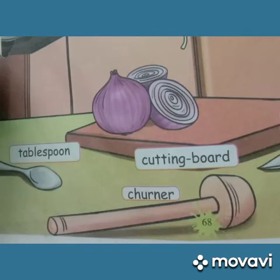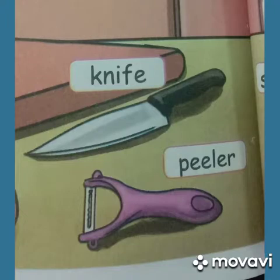Tablespoon — T-A-B-L-E-S-P-O-O-N. Cutting board — C-U-T-T-I-N-G B-O-A-R-D. Churner — C-H-U-R-N-E-R. Knife — K-N-I-F-E. Peeler — P-E-E-L-E-R.